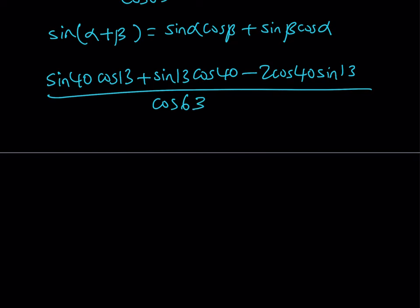Now once you expand this you're going to notice that we have some like terms. This one sine 13 cosine 40 and then we're just subtracting 2 times the same thing. So 1 times something minus 2 times the same thing gives us negative 1 times the same thing.